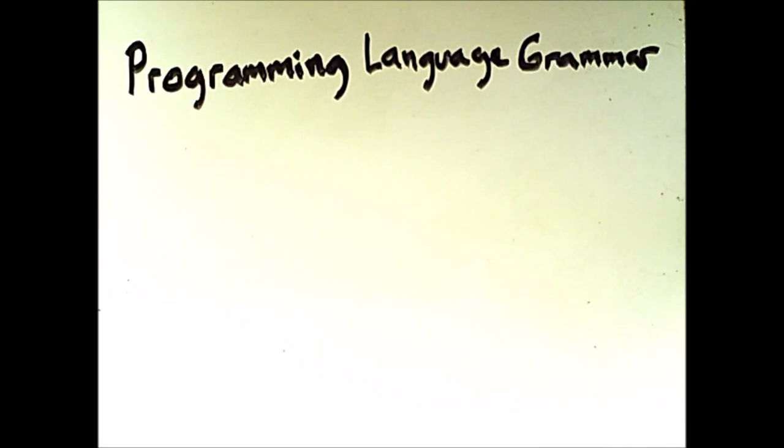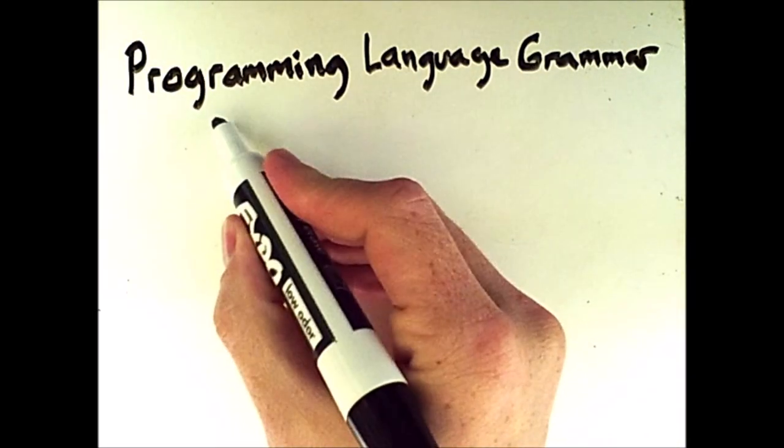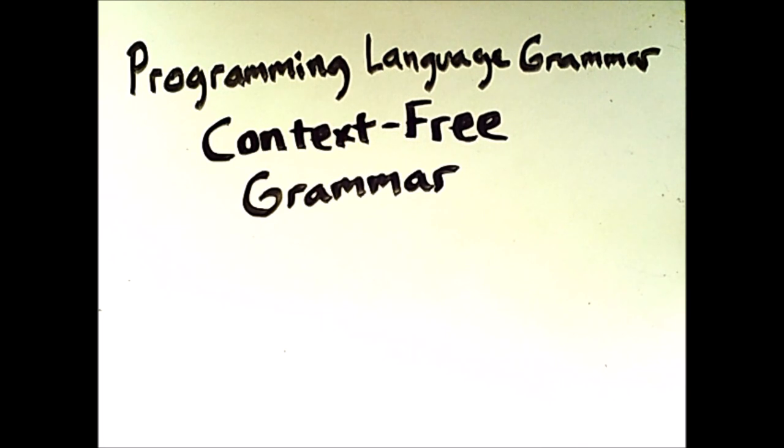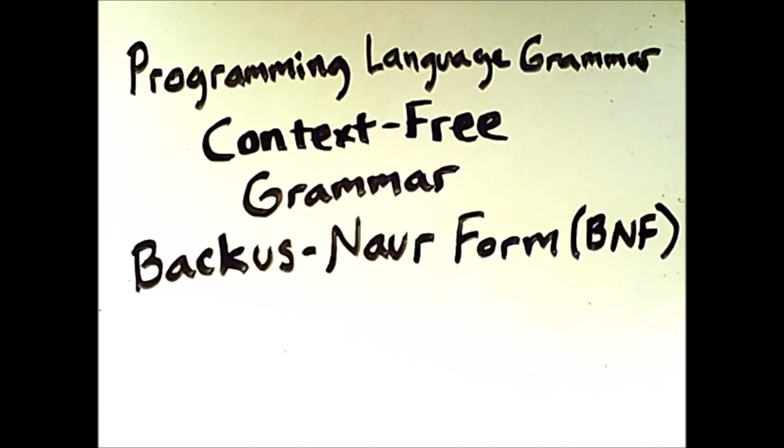This video introduces the concept of a context-free grammar, which is a form of grammar ideally suited to describing the syntax of programming languages. The notation typically used to describe such grammars is Backus-Naur form, or BNF, which was first used to describe the ALGOL 60 programming language.